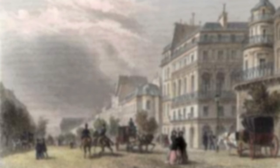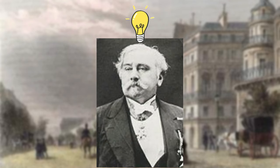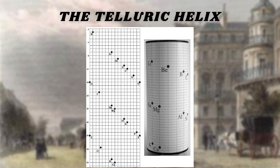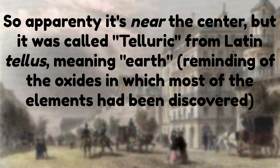In 1862, Alexandre-Émile-Béguyer de Chancourtois realized that elements ordered by the atomic weights, like in Dalton's table, displayed similar properties at regular intervals, periodically, and created the tellurium spiral to visualize this. Elements aligned vertically displayed similar properties. Also, tellurium is in the center, as you can see, hence its name.